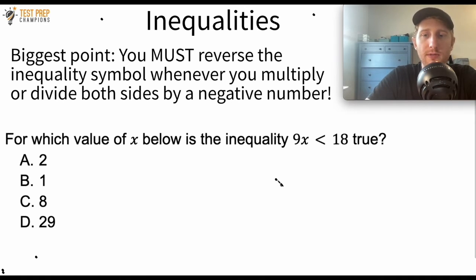Okay, so there is a little bit of a twist here to this question. We're going to start off by just getting x by itself. To do that, we're going to divide by 9 on both sides. So the 9s cancel out on the left, and on the right we get 2, because 18 divided by 9 is 2.